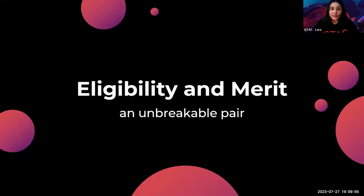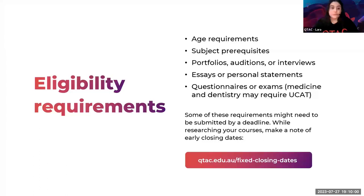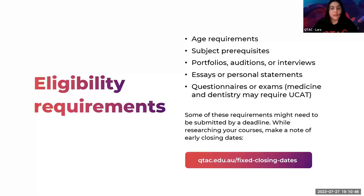Eligibility and merit — this is the unbreakable pair and how you will be selected for a course. Eligibility requirements can include age requirements, subject prerequisites, portfolios, auditions or interviews, essays or personal statements, questionnaires or exams. You might have to do a separate application to universities for some medicine and dentistry courses. It's really important to remember that a lot of these requirements will likely have to be submitted by an earlier deadline, so make a note of any earlier closing dates.